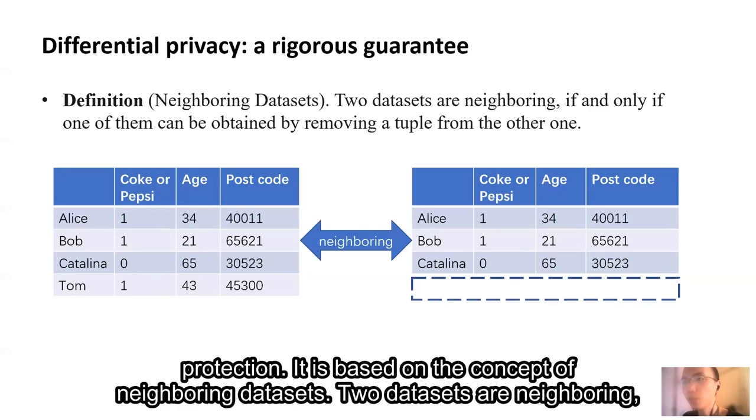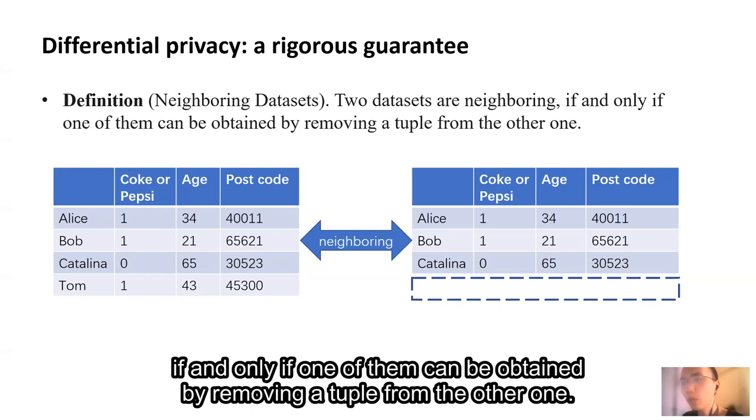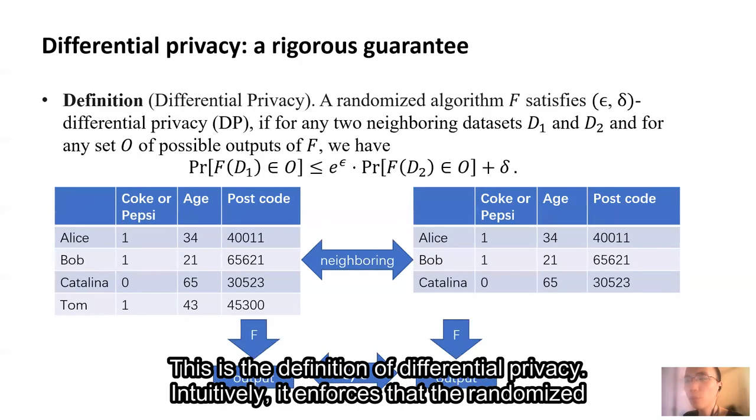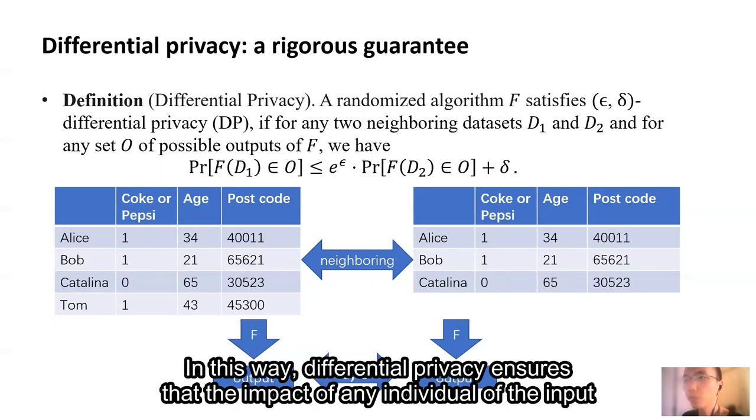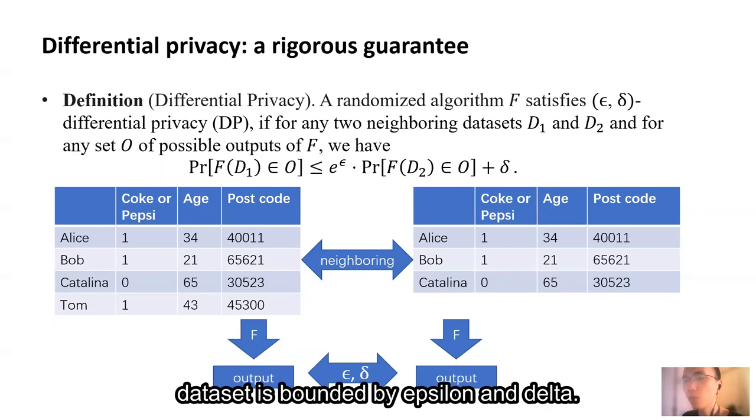It is based on the concept of neighboring datasets. Two datasets are neighboring if and only if one of them can be obtained by removing a tuple from the other one. Intuitively, it enforces that the randomized algorithm F outputs any possible result with similar probabilities for neighboring datasets. In this way, differential privacy ensures that the impact of any individual in the input dataset is bounded by epsilon and delta.